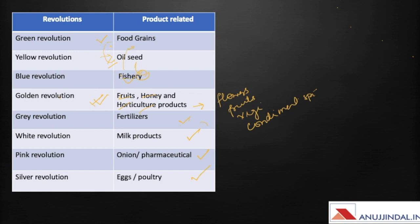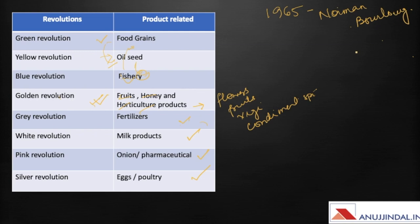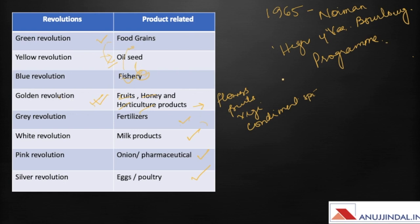Out of these, the most important revolution is green revolution because it was one of the first revolutions in agriculture. It was first started in 1965. The founder, or the father of green revolution, is Norman Borlaug. He developed a high yielding variety which was adopted in various countries, and it was also known as the High Yielding Variety Program.